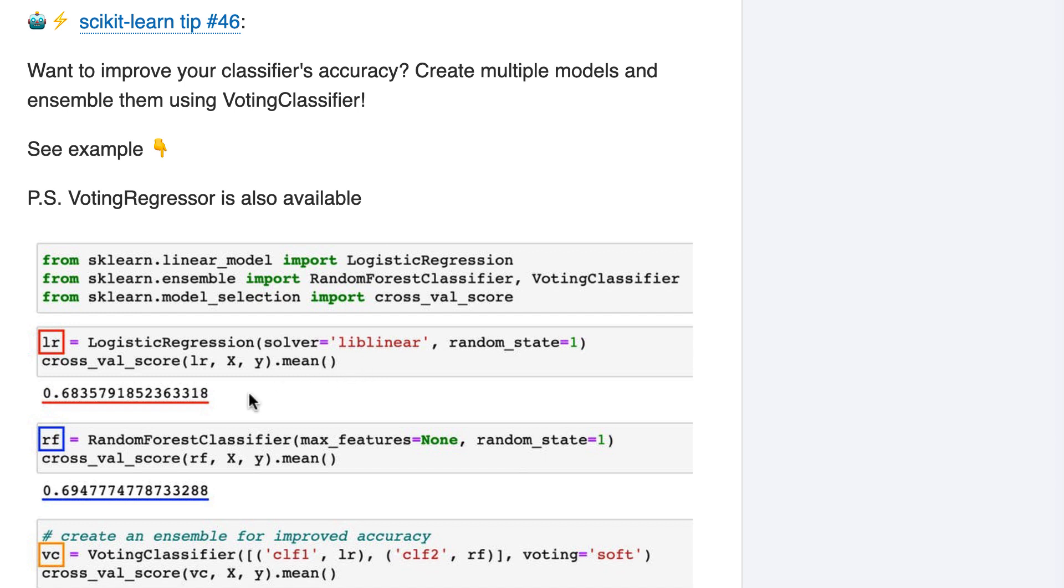It outputs an accuracy of 68%. Next, we've got a random forests model. We calculate the cross-validated accuracy with the same X and Y, and it outputs an accuracy of 69%.